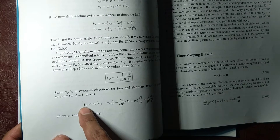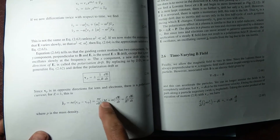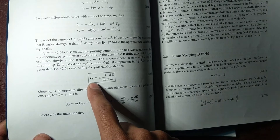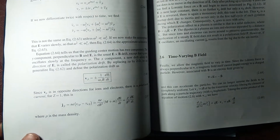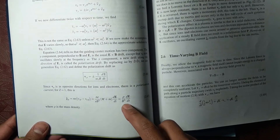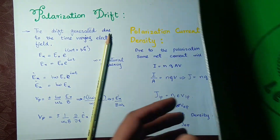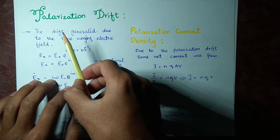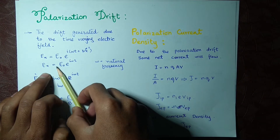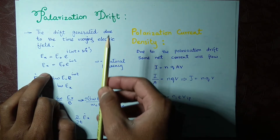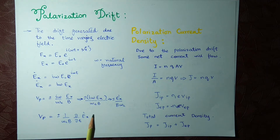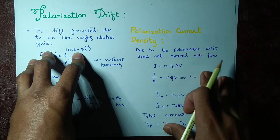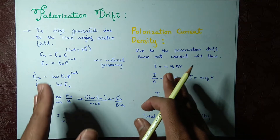J is for the current density and P is for the polarization. Today we are going to describe this equation. In my previous lecture I told you about the polarization velocity, and today from that polarization velocity we are going to find out the polarization drift. Polarization drift only arises when we have a time-varying electric field.